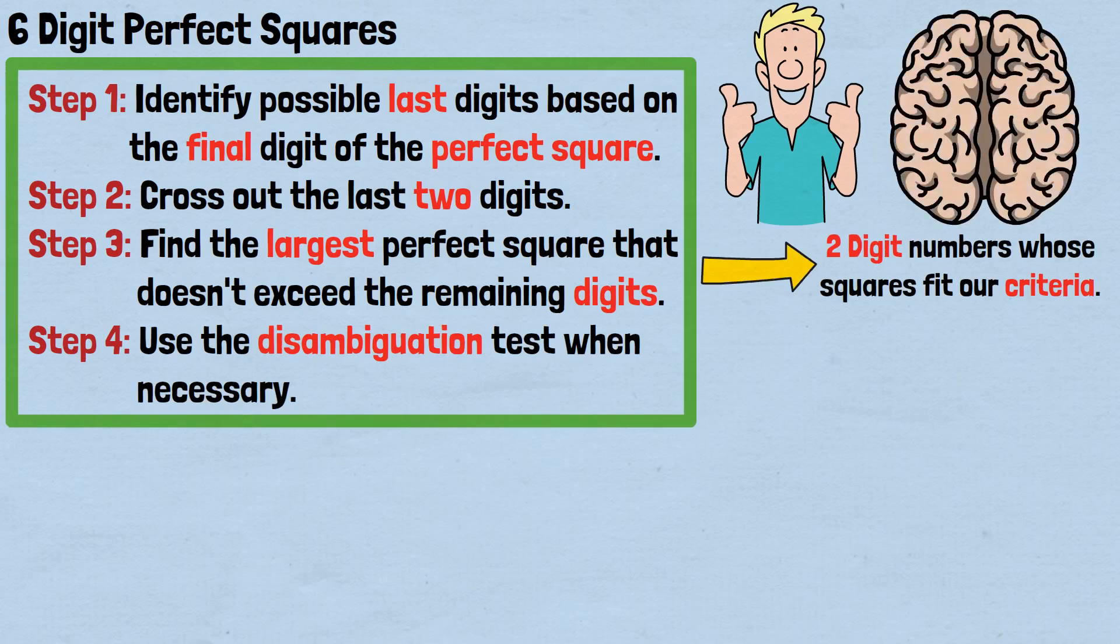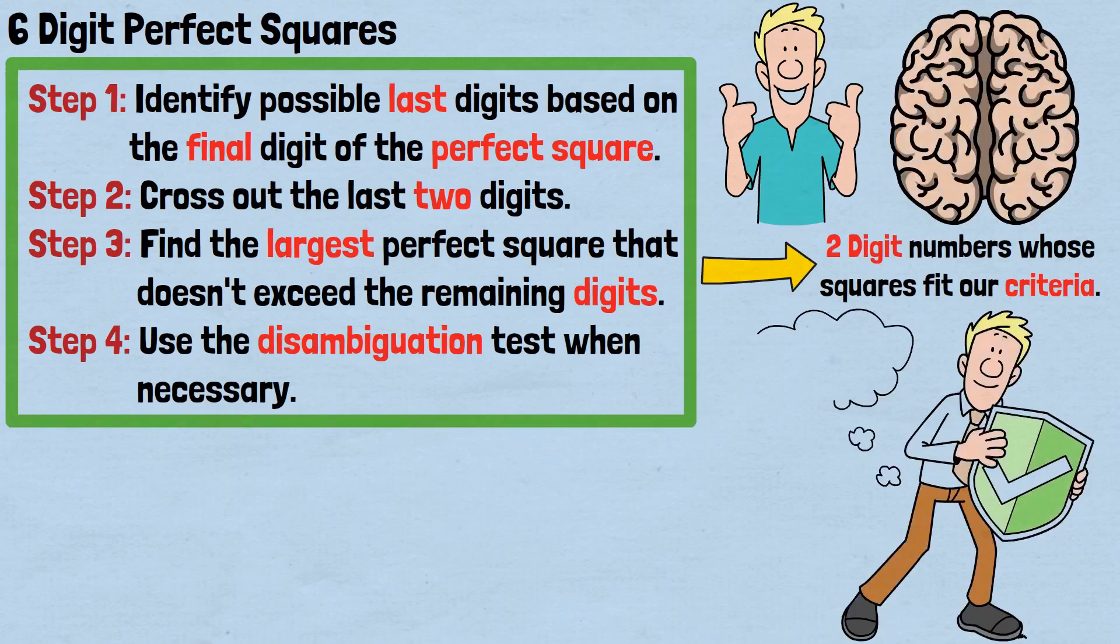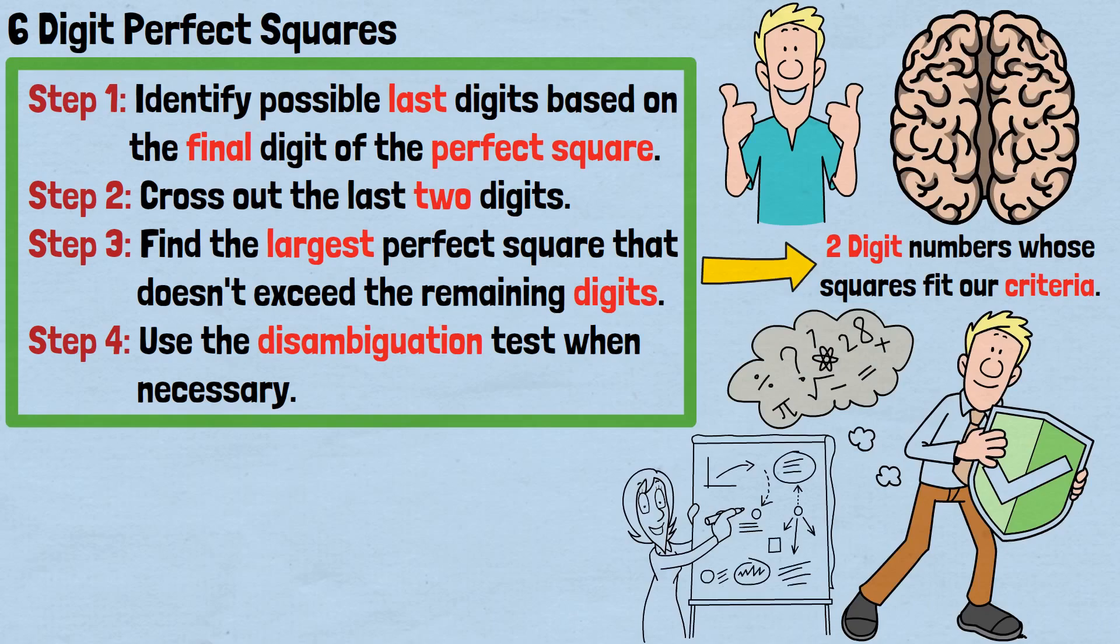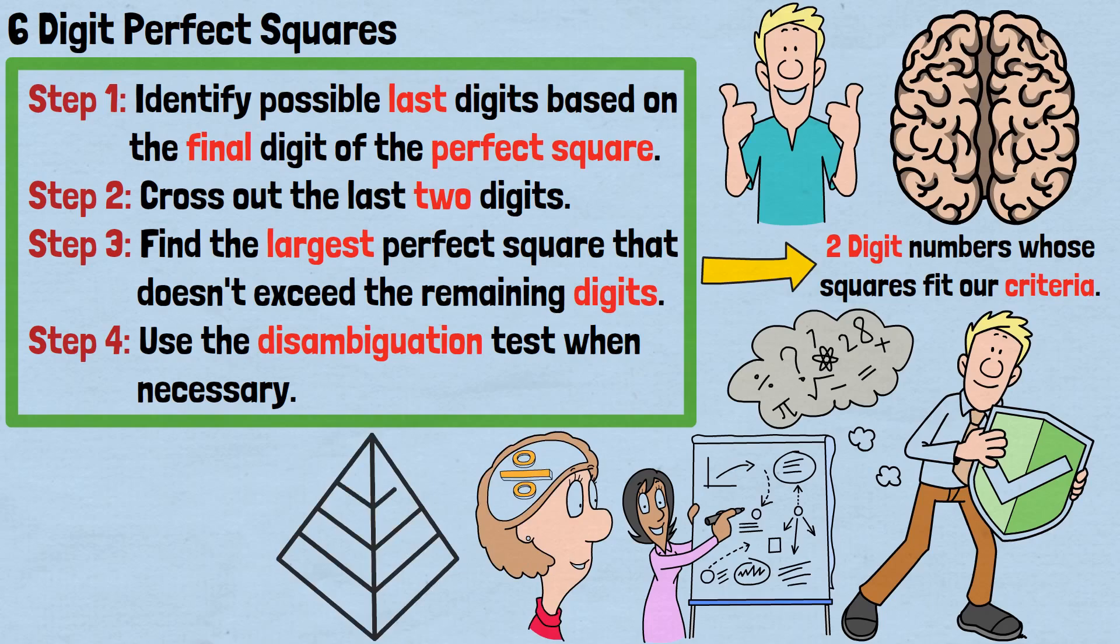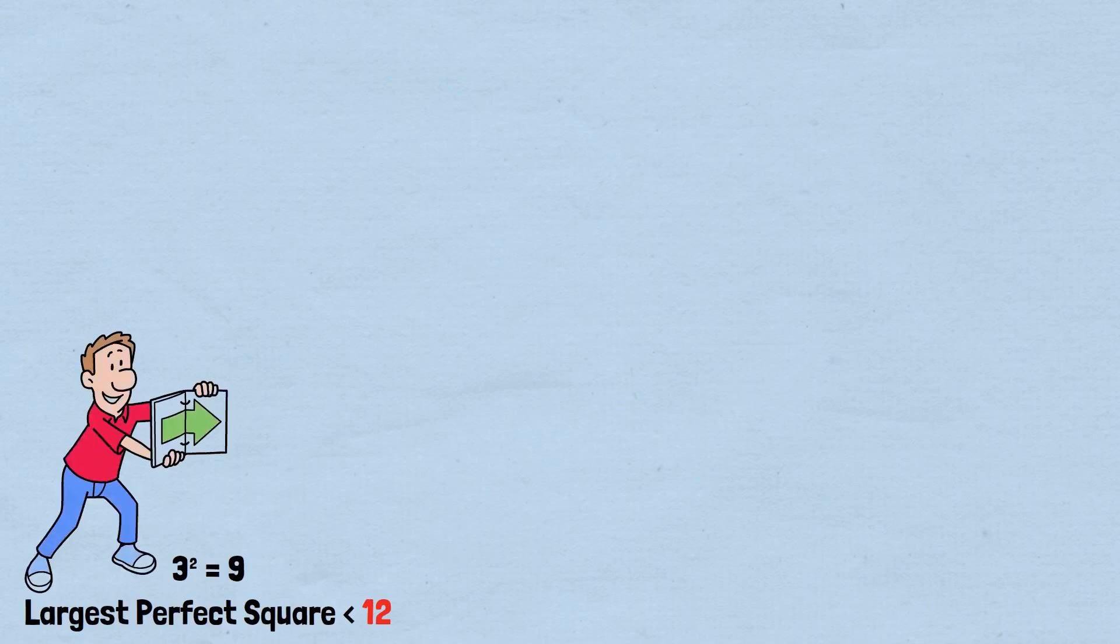From a psychological perspective, this method succeeds because it transforms a complex calculation into a series of simple pattern recognition tasks. Instead of trying to hold multiple approximations in working memory while performing mental arithmetic, you're following a clear, step-by-step algorithm. The method also provides immediate feedback and verification at each step, reducing cognitive load and increasing confidence. When you see that 3 squared equals 9 is indeed the largest perfect square less than 12, you know you're on the right track.